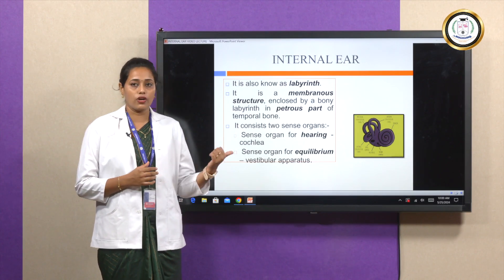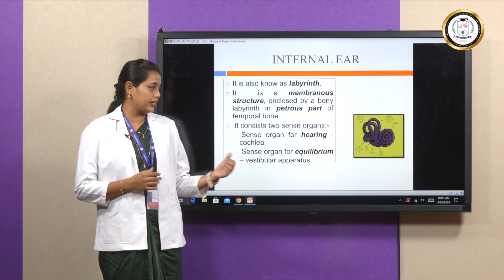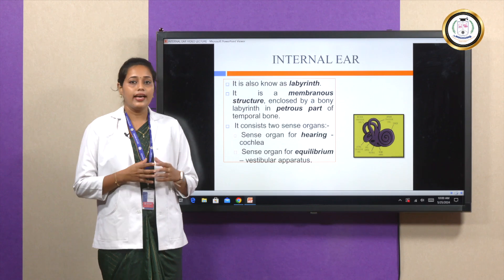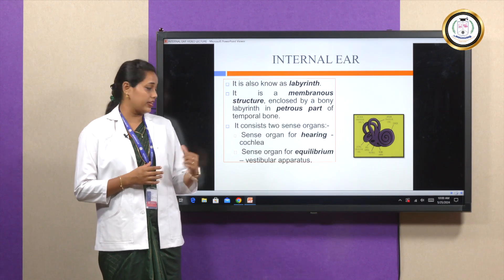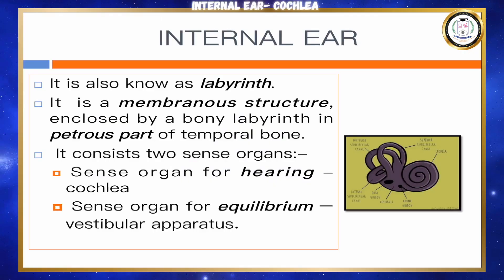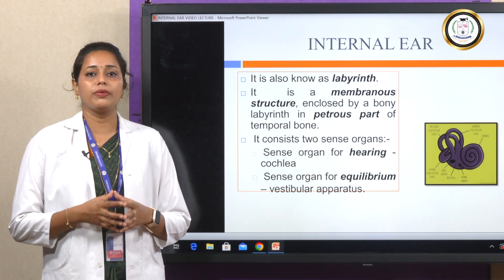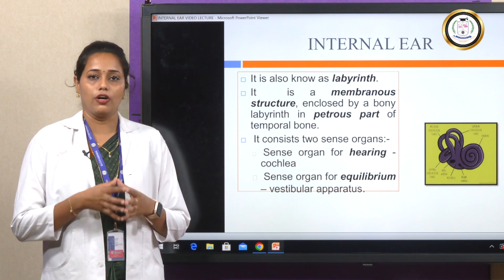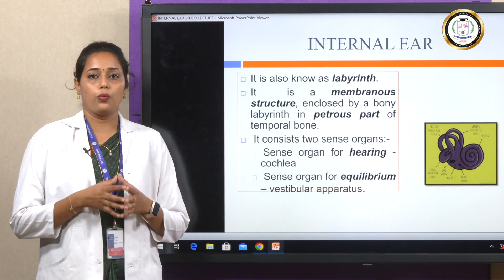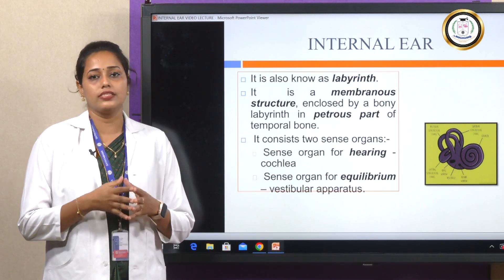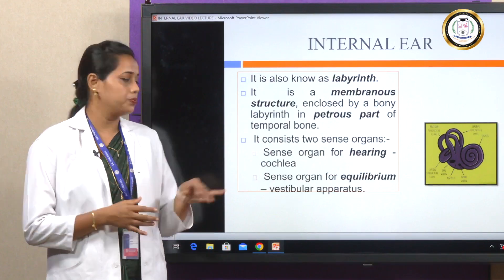The sense organ for hearing is known as the cochlea, and the sense organ for equilibrium is known as the vestibular apparatus. In this video, we will be learning about the cochlea. For the vestibular apparatus, we have a separate video.